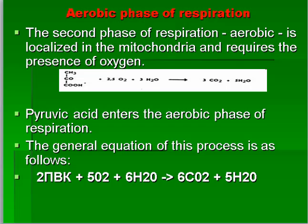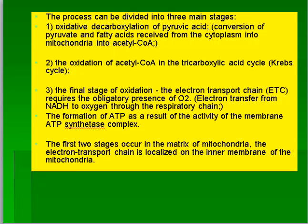The aerobic phase of respiration is localized in the mitochondria and requires the presence of oxygen. Pyruvic acid enters the aerobic phase. This process can be divided into three main stages: oxidative decarboxylation of pyruvic acid; conversion of pyruvic acid and fatty acids from the cytoplasm into acetyl-CoA; and oxidation of acetyl-CoA in the tricarboxylic acid cycle (Krebs cycle). The final stage is the electron transport chain, which requires oxygen. Electrons are transferred from NADH to oxygen through the respiratory chain, forming ATP via the membrane ATP synthase complex.